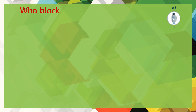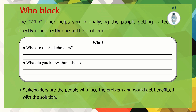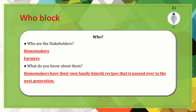Let us start with the 'who' block. In this stage, we look at the person who is having the problem — what we call stakeholders. It helps in analyzing the people affected directly or indirectly by the problem. Stakeholders are the people who face the problem and would benefit from the solution. In our kimchi example, homemakers face the problem of not getting napa cabbage at a nominal price. Farmers are also stakeholders because they expect good returns during this season for their livelihood, as they rely on napa cabbage sales for their living.